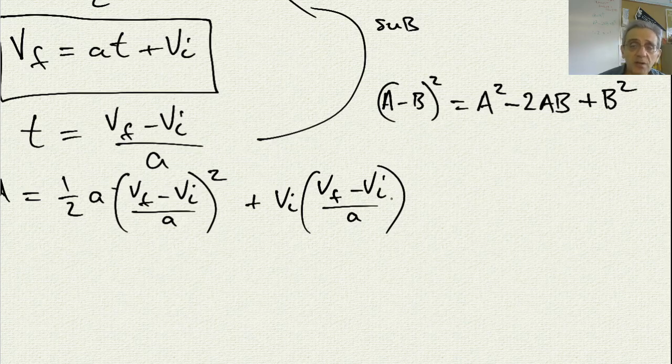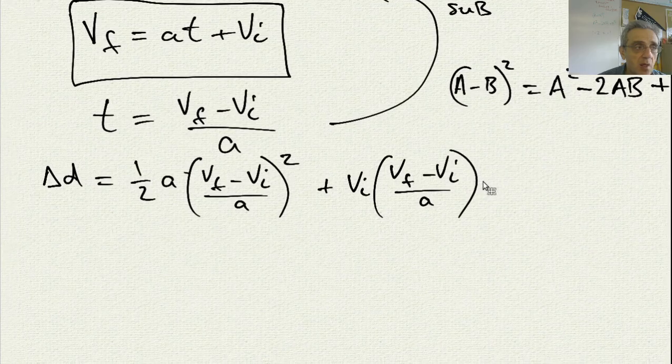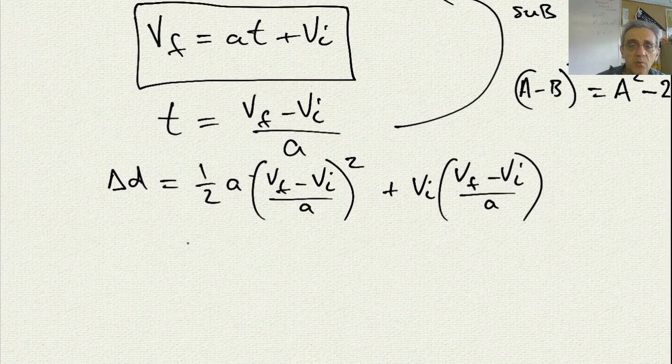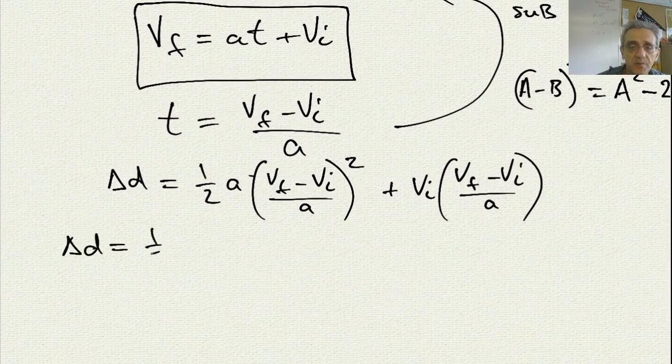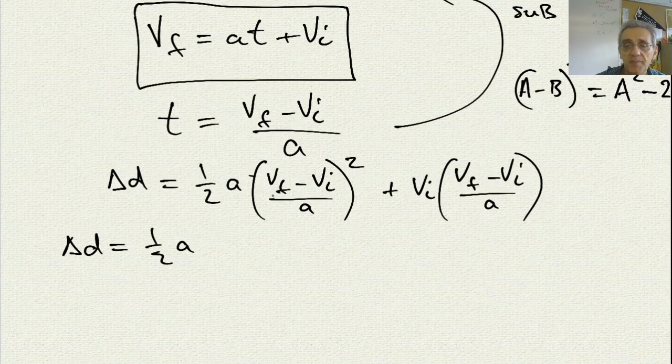So now I'm going to utilize that equation here. And what I'll do is I'll say delta d equals 1 half a. And now I'm going to expand the numerator because it's essentially, if I write it one last time.